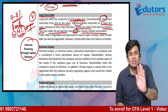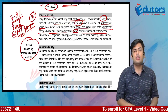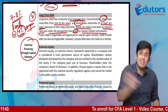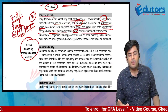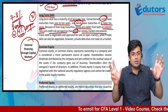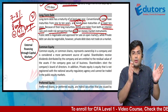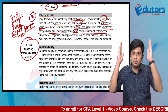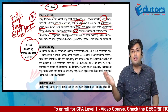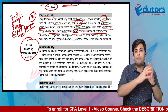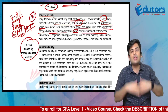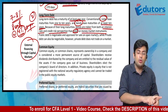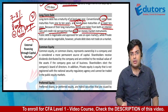Any debt instrument with a maturity of less than one year is a money market instrument. So the structure is: 0 to 1 year — money market instrument; 1 year to 10 years — notes; 10 years plus — bonds. Obviously bonds have the longest maturity, so they are the most risky compared to notes and money market instruments.